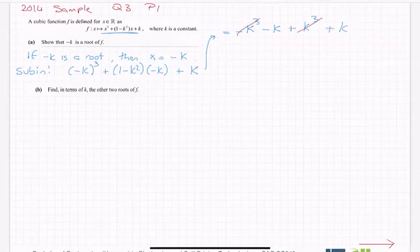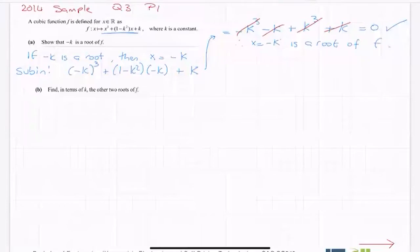Minus k and k cancel, that cancels. So you can see that that's equal to zero. So therefore, x is equal to minus k is a root of f. And the easiest conclusion is to give them back their own words.